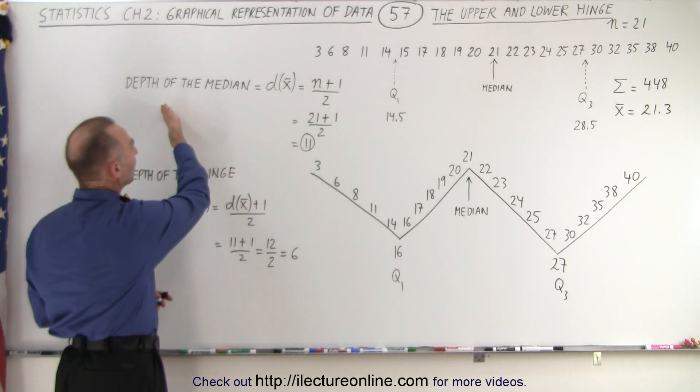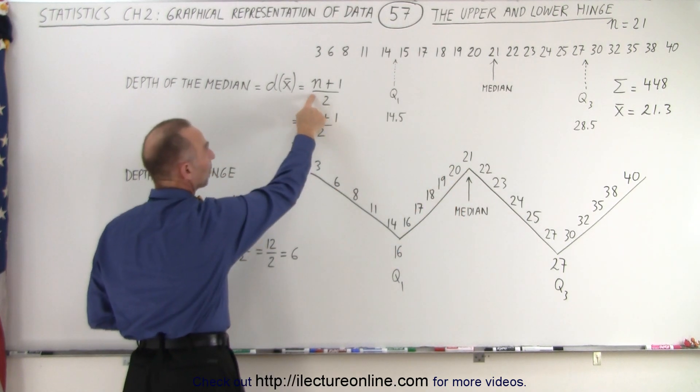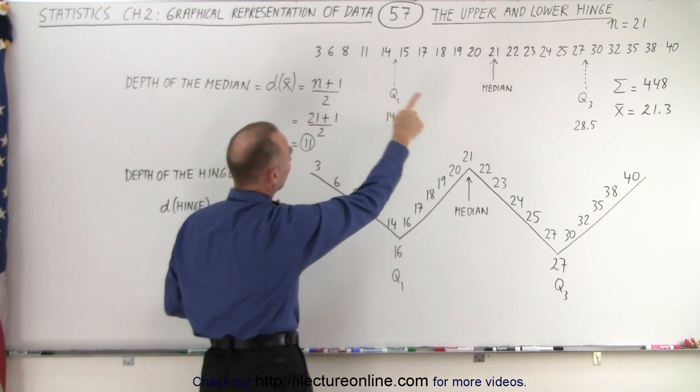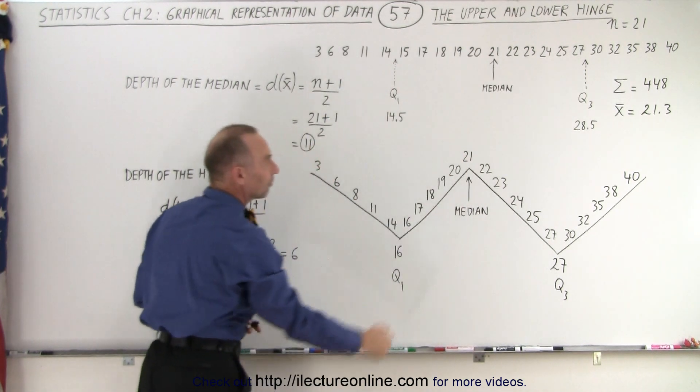Notice that what we call the depth of the median is where the median is found. You take the number of data points, which in this case is 21, add 1 to it, divide by 2, and you end up with the position of the median.